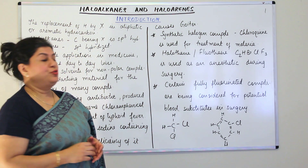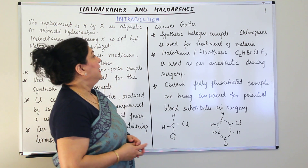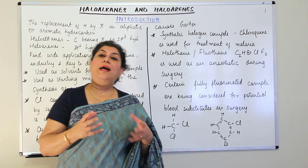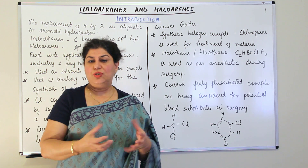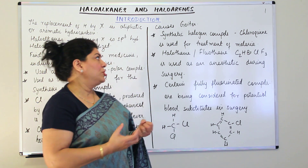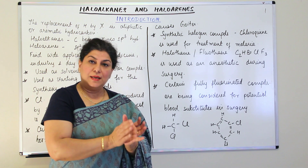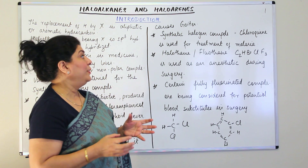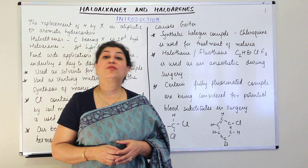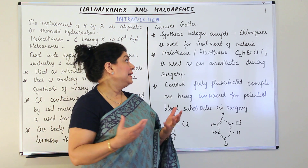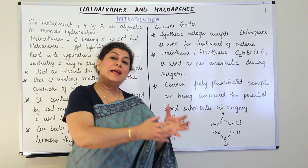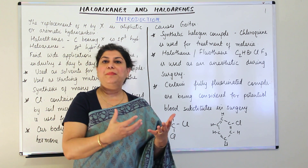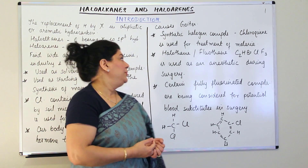Another use of these hydrocarbons is in synthetic halogen compounds — not from natural sources but synthetically prepared halogen-substituted hydrocarbons. For example, chloroquine is used in the treatment of malaria. So not only naturally produced halogen-substituted hydrocarbons but also synthetically prepared ones have important applications in medicine.